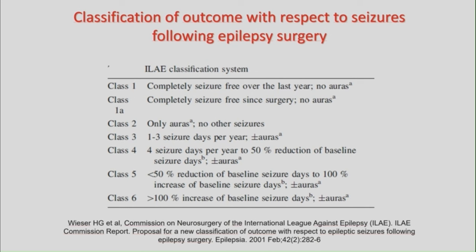In the following case presentations, I will use the ILAE classification of outcome following epilepsy surgery. This classification reports the patient's outcome class and frequency of postoperative seizure days annually at each anniversary date after surgery, and the classification may change over successive years. Class 1A means seizure-free since surgery. Class 1 is completely seizure-free over the last year. Class 2 is only auras. Class 3 is 1–3 seizure days per year. Class 4 is 4 or more seizure days per year with up to 50% reduction of baseline. Class 5 is unchanged and class 6 is worse.